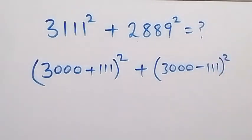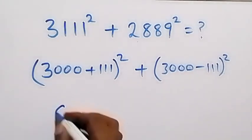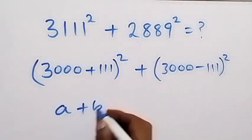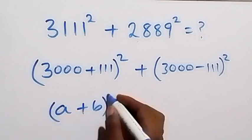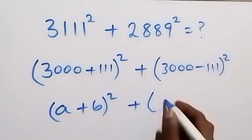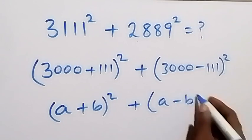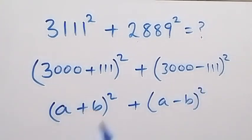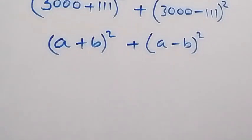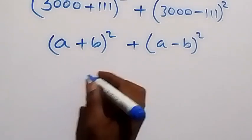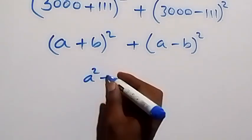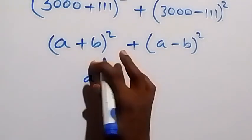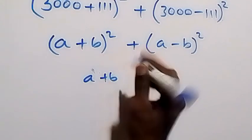From here we can say that we can write this as (a plus b) all squared, then plus (a minus b) all squared. We have 3000 as a and 111 as b. Then from this identity, when we expand (a plus b) all squared.